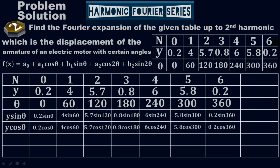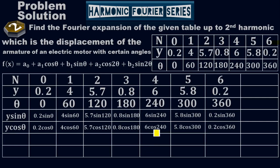Similarly, these are the values for y·cos(θ). For the first point: 0.2 × cos(0°). For the second: 4 × cos(60°). For the third: 5.7 × cos(120°). For the fourth: 0.8 × cos(180°). For the fifth: 6 × cos(240°). For the sixth: 5.8 × cos(300°). For the seventh: 0.2 × cos(360°).